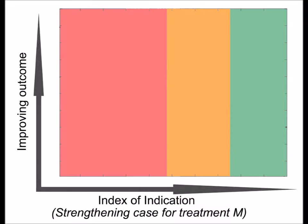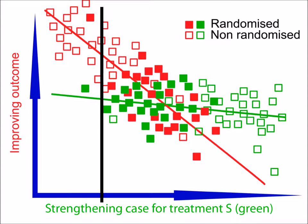At the start of a null-seeking trial there would be a delay before results became available and during this time conventional decision making would apply. Note that there is no need for the index of indication to be defined in the same way for all participating clinicians or patients. It could be a function of variables including patient age, sex, their general condition and the severity of the disease being treated. As long as the necessary data is collected from all patients, several functions of one or more of these data variables could be used as the index of indication. The multiple linear regression model for outcome prediction being an obvious one.